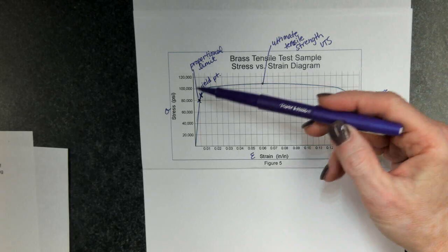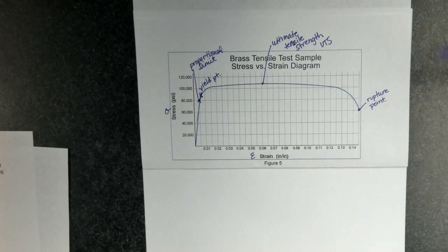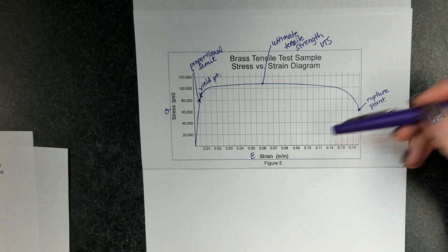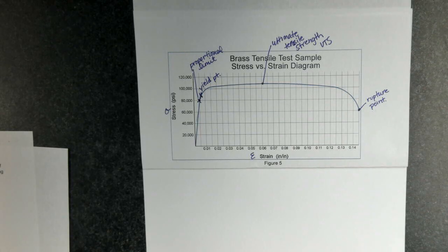So these points are important to us. They tell us a lot about the different types of material. The example I've given to you here is for brass.